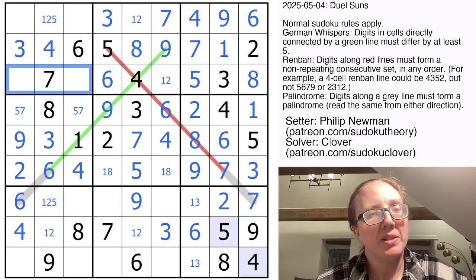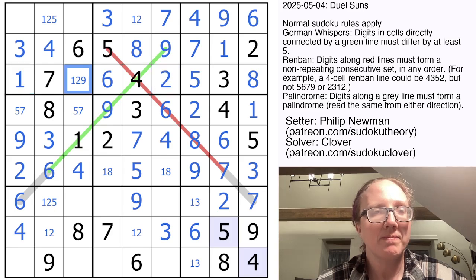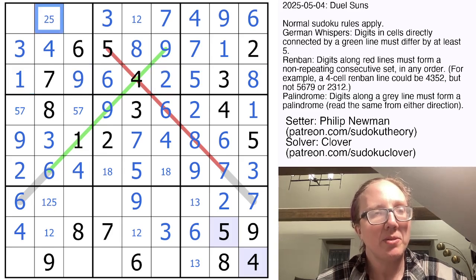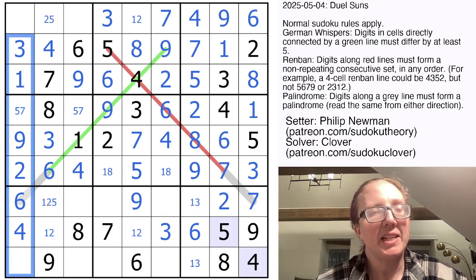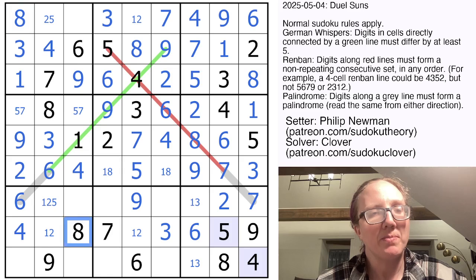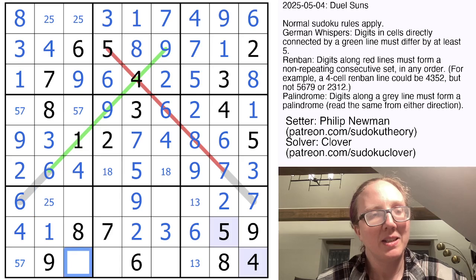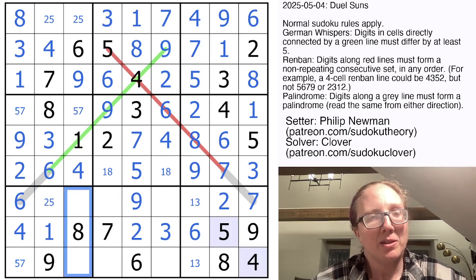In this row, we still need one, two, and nine. We have a two and nine in this column already. So that's a naked one. This is no longer a one. In this column, we still need an eight and it can only go here because there's an eight in this region. This has to be a five or a seven. This has to be a two or five. That's a one, two, and one.